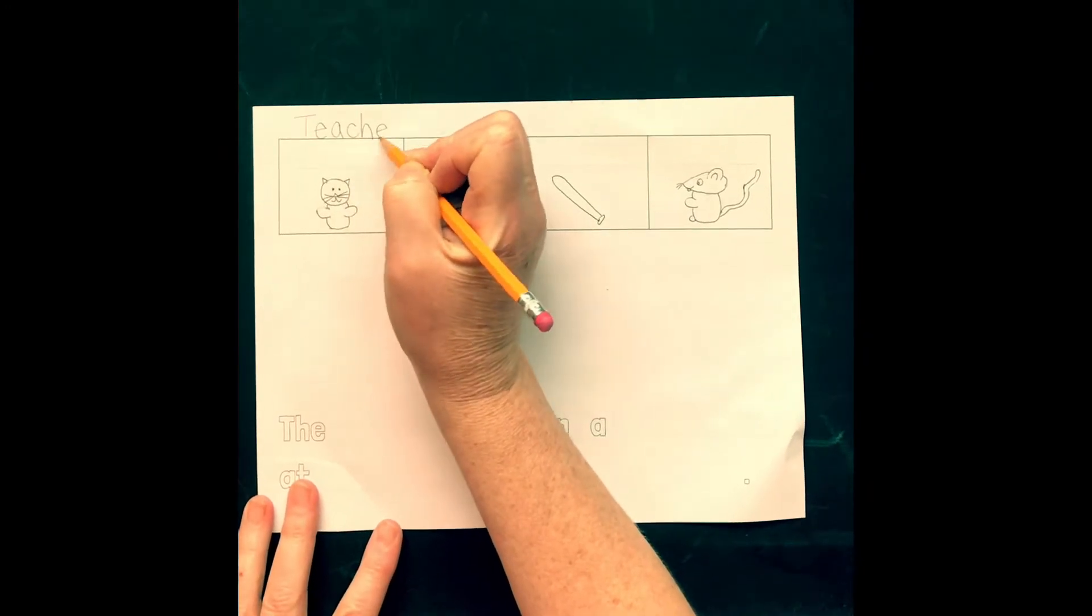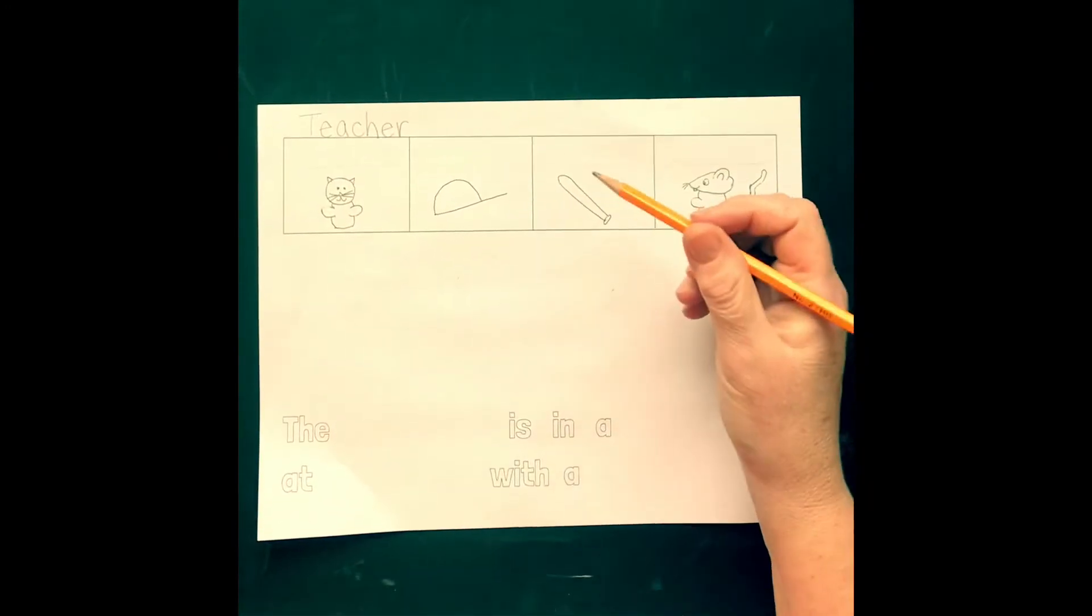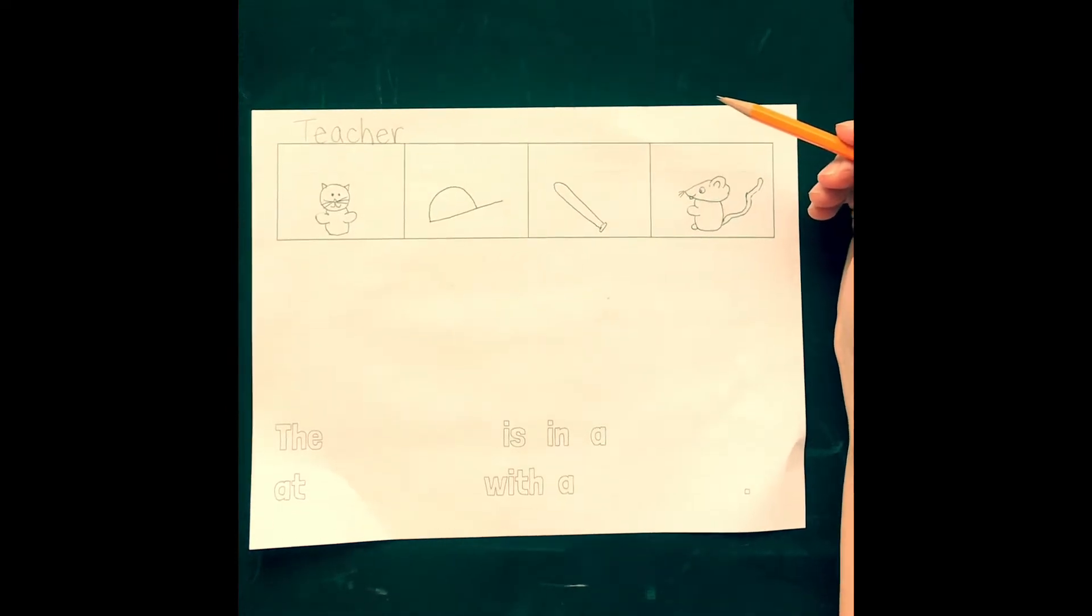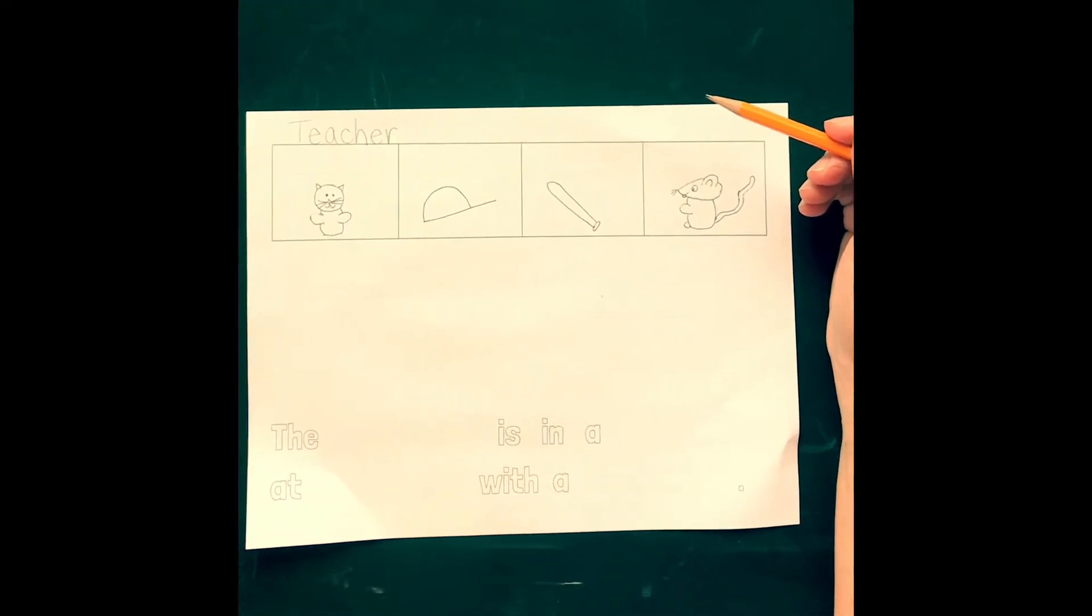All right, teacher. And now first let's listen to the whole story. The cat is in a hat, a bat with a rat.